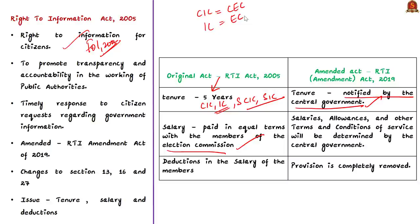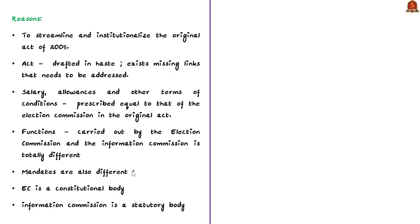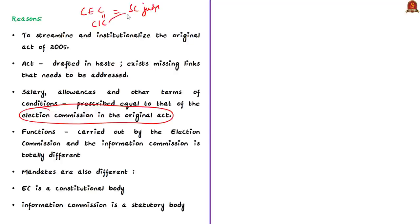Secondly, the original Act stated that CIC and ICs at the central level would be paid salaries equivalent to the Chief Election Commissioner and Election Commissioners respectively. Similarly, state-level CIC and ICs would receive salaries equivalent to the Election Commissioner and Chief Secretary to the state government respectively. This provision was removed by the amendment, and now salaries, allowances, and other terms and conditions of CIC and ICs at both central and state levels will be determined by the central government.